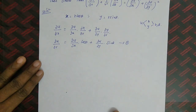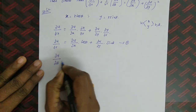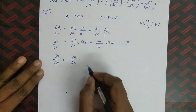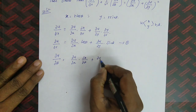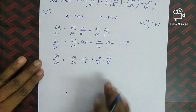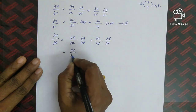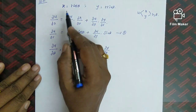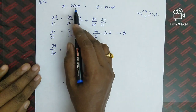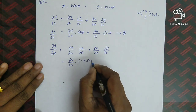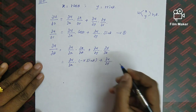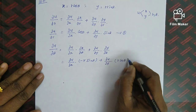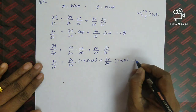By the same manner we find ∂u/∂θ = (∂u/∂x)(∂x/∂θ) + (∂u/∂y)(∂y/∂θ). Since x = r cos θ, ∂x/∂θ = −r sin θ, and since y = r sin θ, ∂y/∂θ = r cos θ. So ∂u/∂θ = (∂u/∂x)(−r sin θ) + (∂u/∂y)(r cos θ). We call this equation 2.